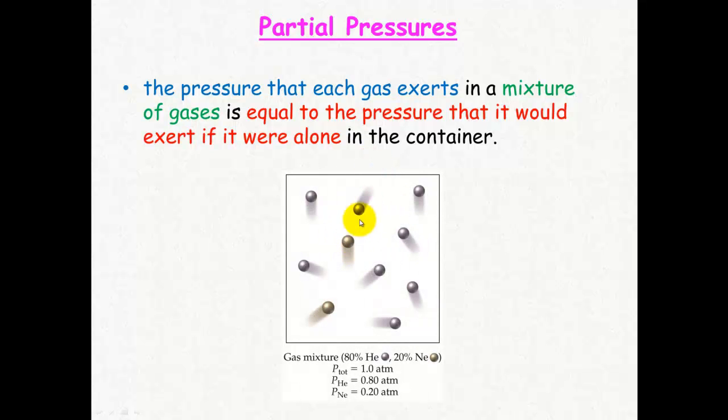So each of these gases here has its own pressure. This is a gas mixture of 80% helium and 20% neon. Neon being the gold balls, helium being the silver atoms.